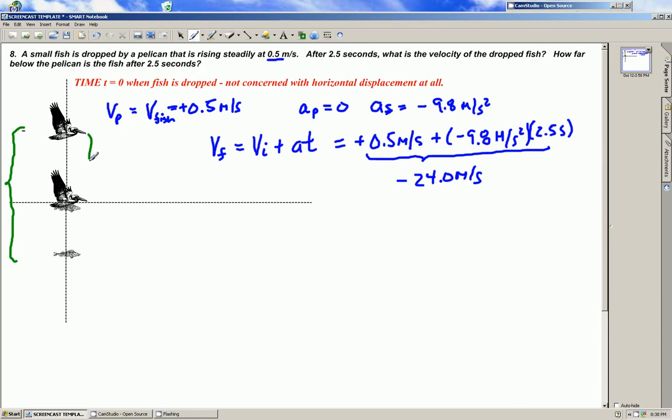So we can calculate this first part of it because the pelican is moving at an average velocity. Its initial velocity is equal to its final velocity, 0.5 meters per second times the time of 2.5 seconds, and that's equal to 1.25 meters. That's important because that's the distance the pelican moves up while the fish is moving down.